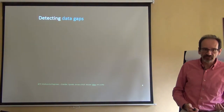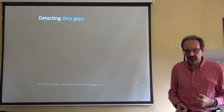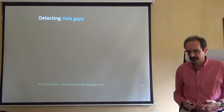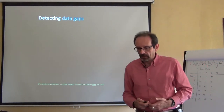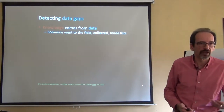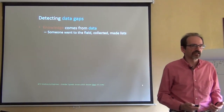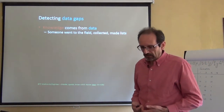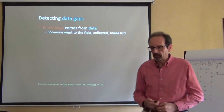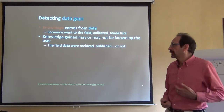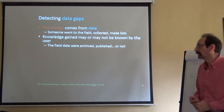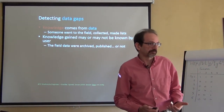We know that gaps exist and we need to detect them — we need to be able to tell where a gap is. Knowledge comes from data. Perhaps somebody went to the field, collected data, made lists — but this knowledge, such as the list of species of a site, might or might not be known to others. It might happen that we can gain knowledge from somebody else's work, or the user might not know that data exists. Both things can happen.